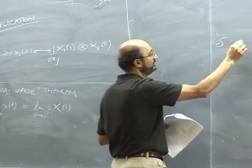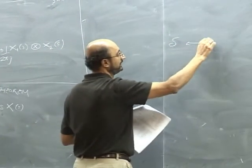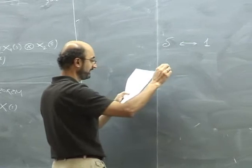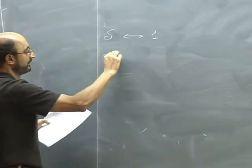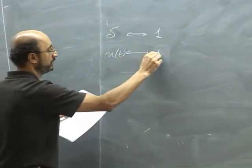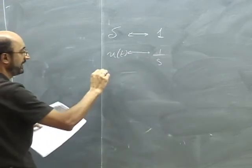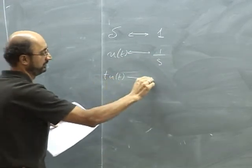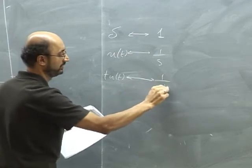This will be useful. So 1 is a delta — it goes to 1, and then there's a nice progression. The unit step goes to 1 over s, and the ramp, which is t·u(t), is going to go to 1 over s squared.